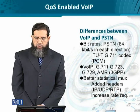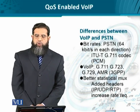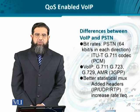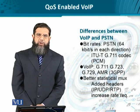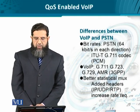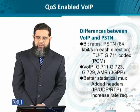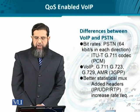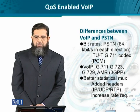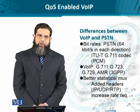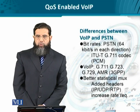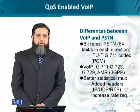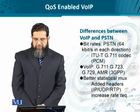Starting with bit rates: PSTN is locked at 64 kbps per the G.711 ITU-T standard. But as far as VoIP is concerned, there is great flexibility. For example, Adaptive Multi-Rate (AMR) from 3GPP can offer rate-adjusting audio depending upon network performance. So Voice over IP is far more flexible with regards to bit rates.